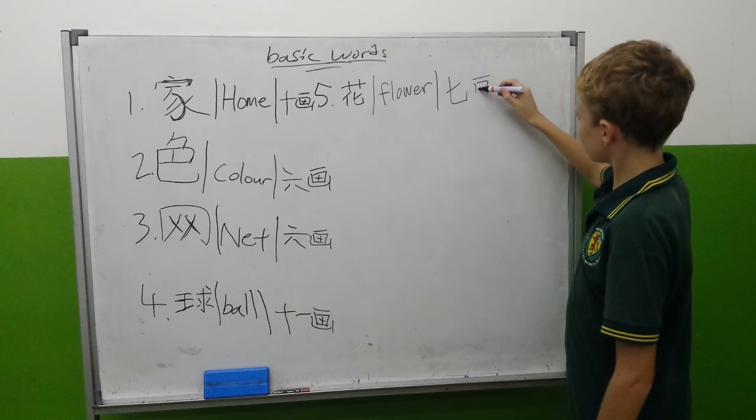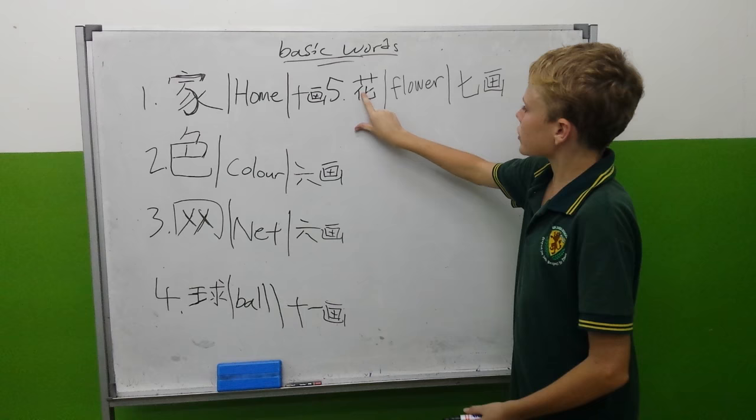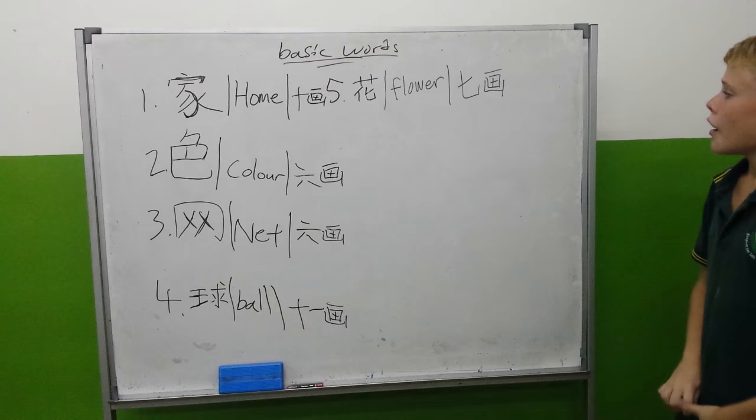As you might even notice, this actually looks like this, right? Because you could actually write it like this, but that's not the right way of writing it. The right way of writing it is taking away this little part here and writing like that. Thank you guys for tuning in. Hopefully you've learned some of it.